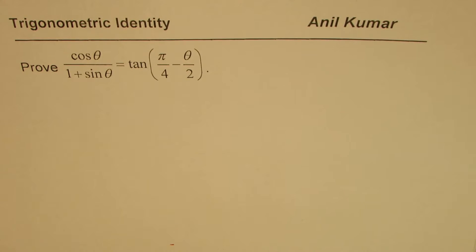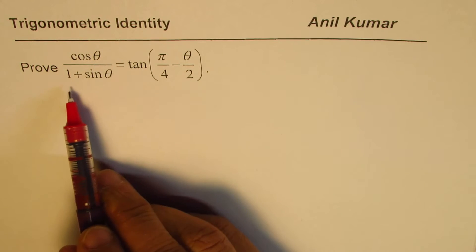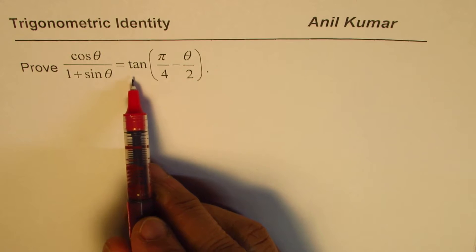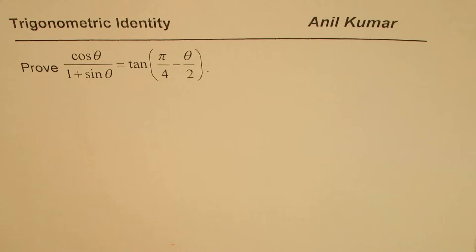I'm Anil Kumar and in this video we'll prove a trigonometric identity: cos theta divided by 1 plus sine theta equals tan(π/4 minus θ/2). We are going to apply these identities to find derivatives of trigonometric inverse functions, so the idea is to recollect what we had learned earlier.